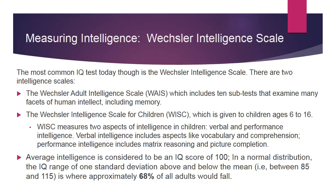Until Wechsler came along. Wechsler is the standard used today and includes two different intelligence scales. The first, the Wechsler Adult Intelligence Scale, includes ten subtests examining many facets of human intellect, including memory. The Wechsler Intelligence Scale for Children is given to children ages 6 to 16 and measures two aspects of intelligence: verbal and performance intelligence. Verbal intelligence includes vocabulary and comprehension; performance intelligence includes matrix reasoning and picture completion.